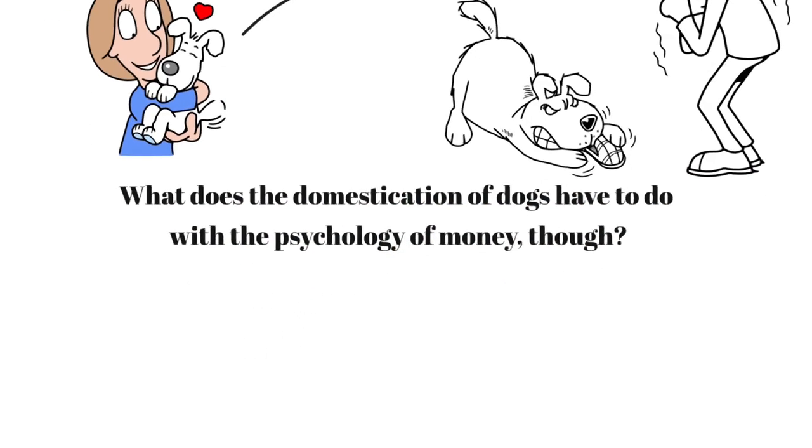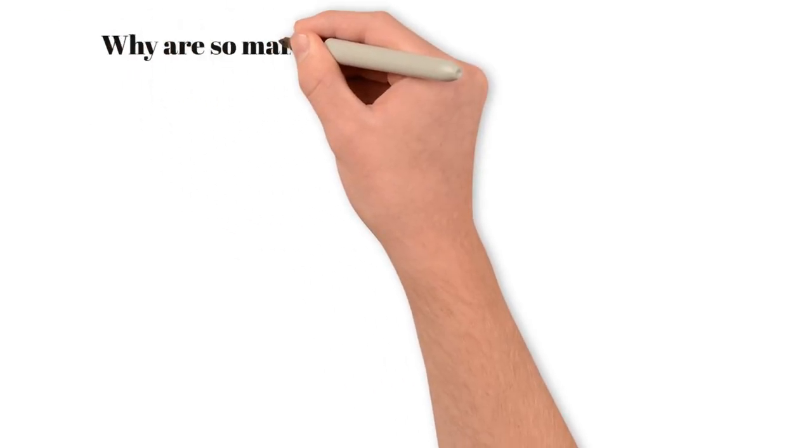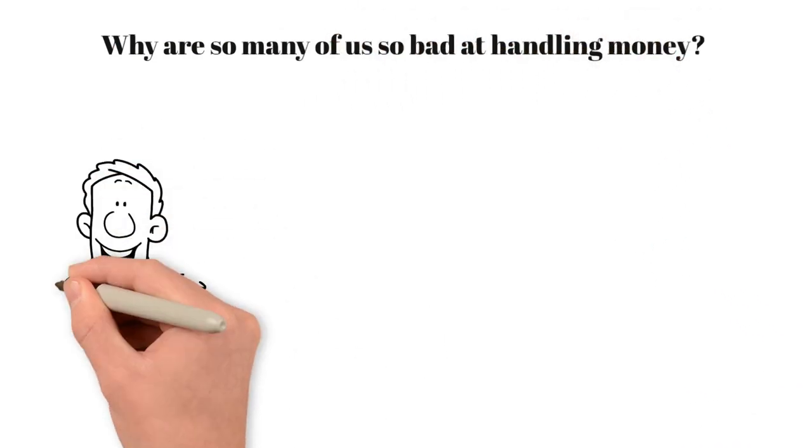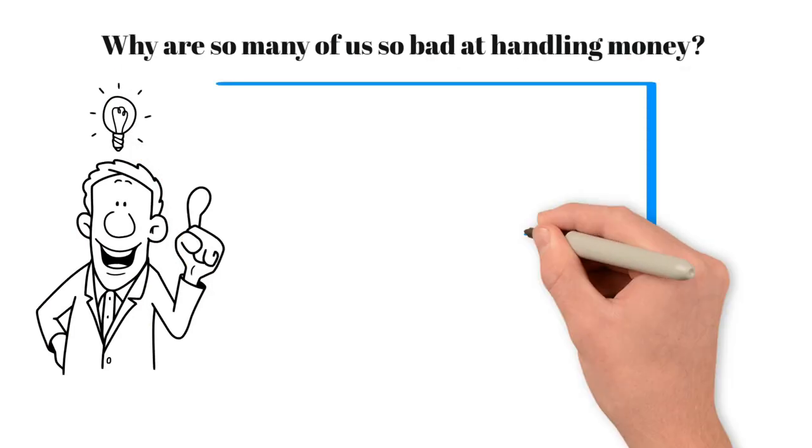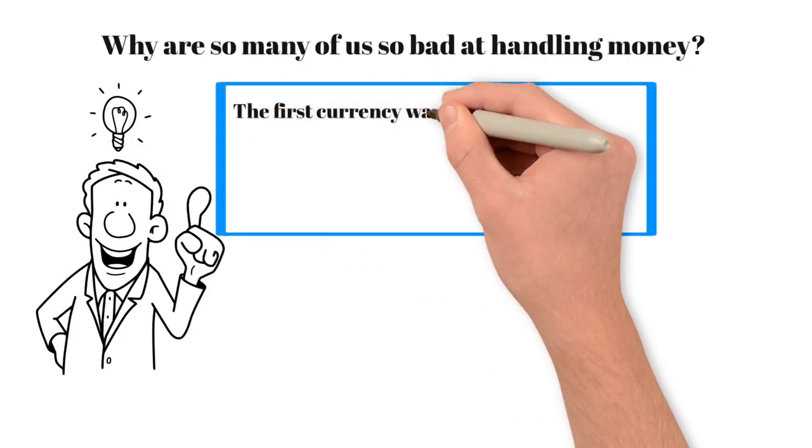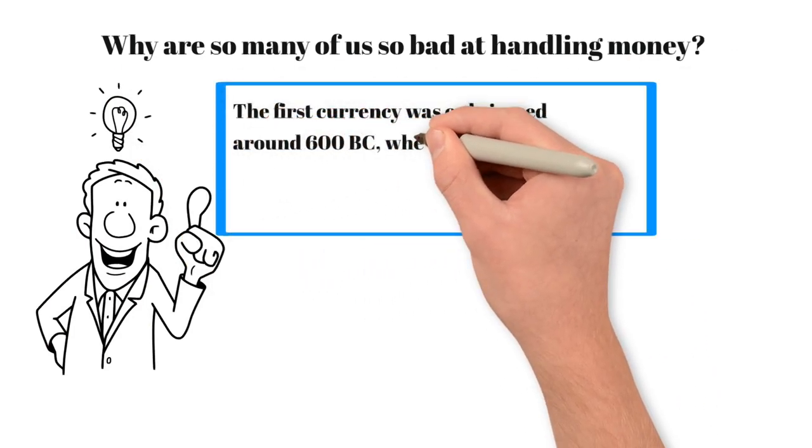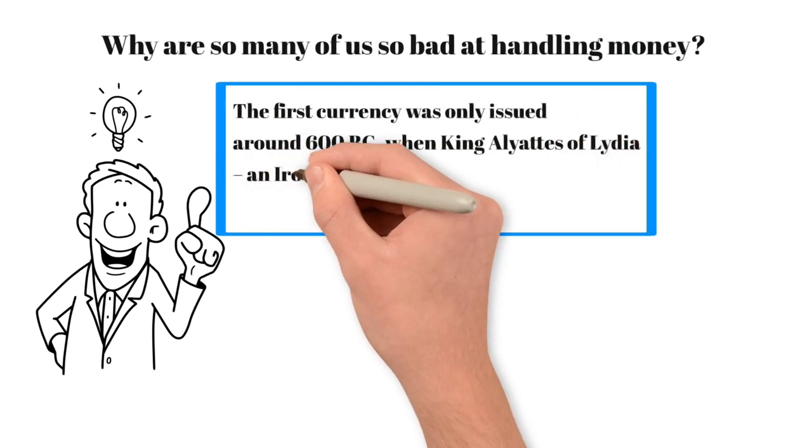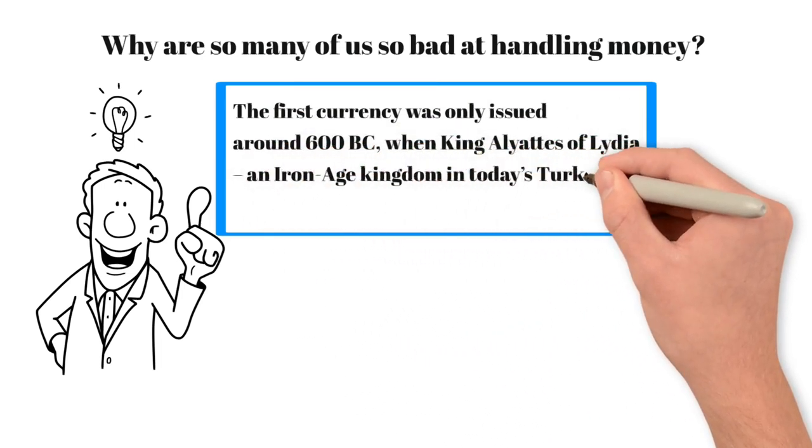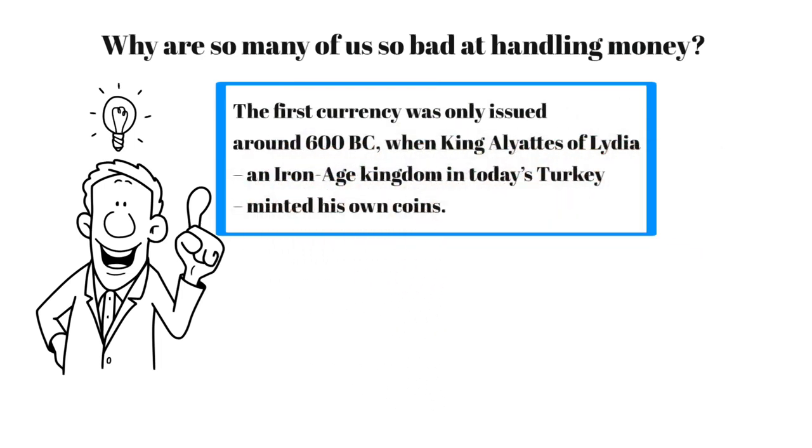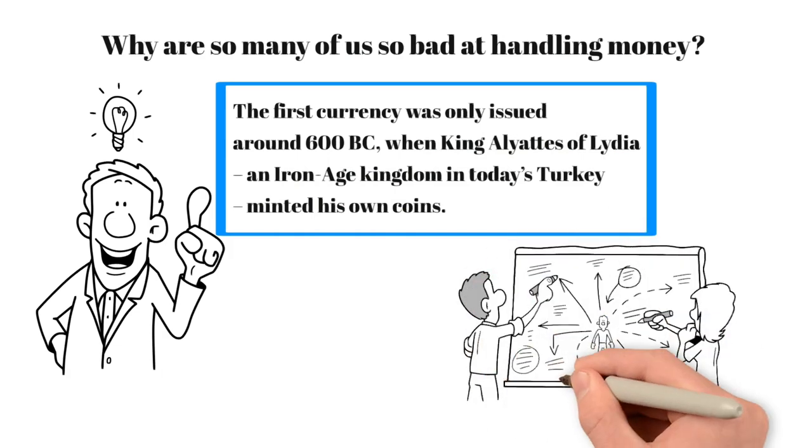What does the domestication of dogs have to do with the psychology of money? Quite a lot, actually. Why are so many of us so bad at handling money? One answer is that it's pretty new in the grand scheme of things. The first currency was only issued around 600 BC when King Alyattes of Lydia, an Iron Age kingdom in today's Turkey, minted his own coins. And that's nothing compared to more complex economic concepts.